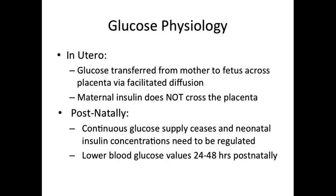In utero, glucose is transferred from the mother to the fetus across the placenta by facilitated diffusion. It should be noted that maternal insulin does not cross the placenta. After birth, the continuous supply of glucose provided by the mother ceases and neonates need to regulate their own insulin concentrations. This is why it may be normal to see lower blood glucose values in the first 24 to 48 hours after birth.